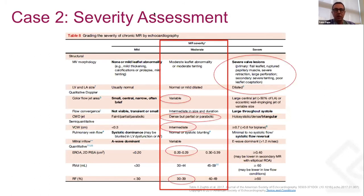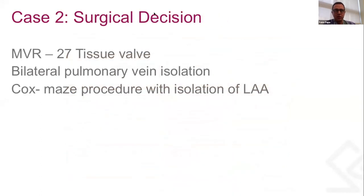She had pretty severely restricted leaflet mobility and a really dilated left atrium. Using color Doppler, there was a variable jet area. The vena contracta width was 0.4–0.5 cm, with an EROA of 0.3 cm² and a regurgitant volume of 34 cc's.